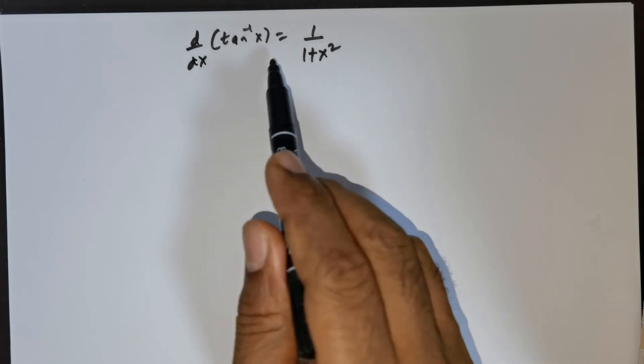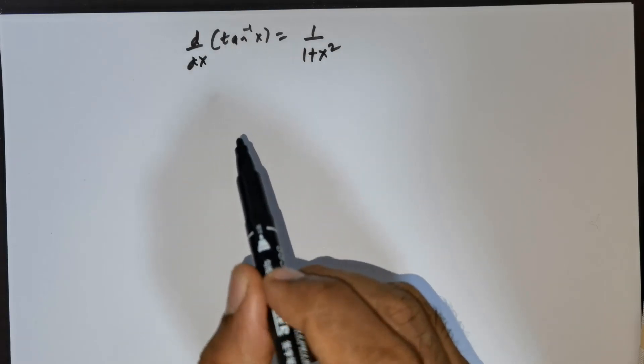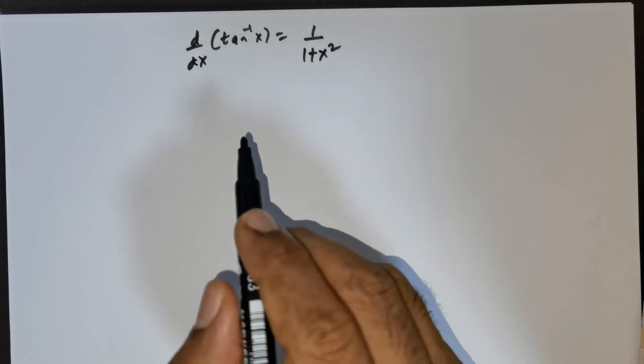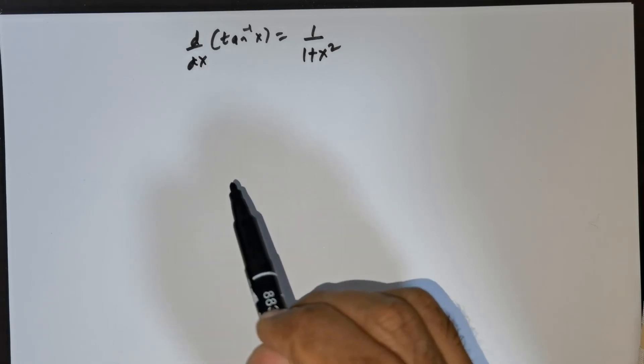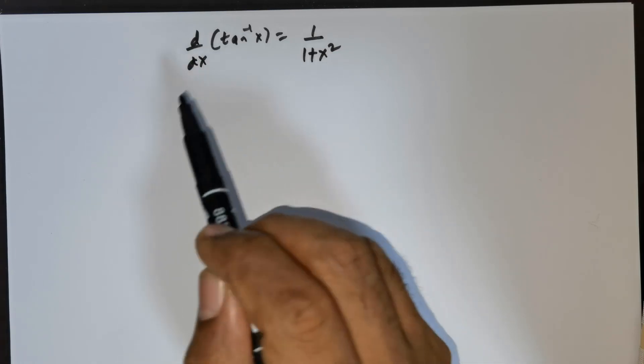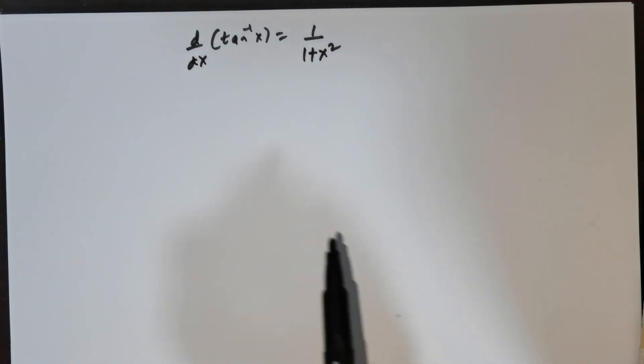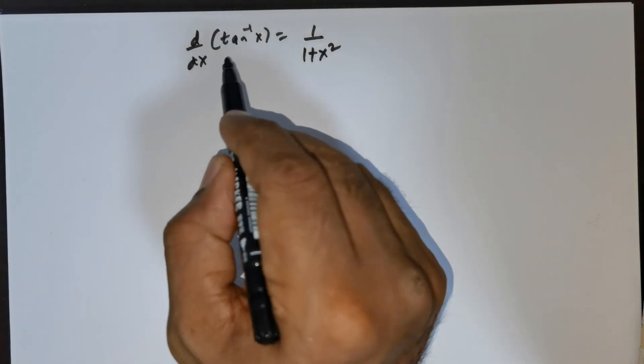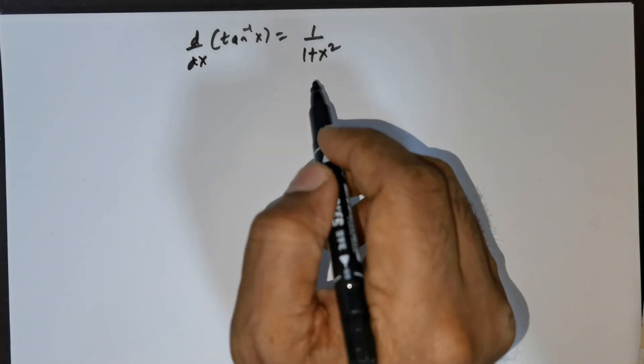I have also used this result in the previous video, so I thought it would be better for me to also support that previous proof with this proof of differentiating tan inverse of x to be equal to 1 over 1 plus x squared.